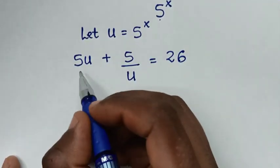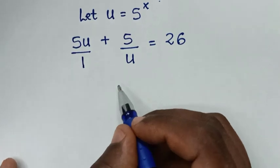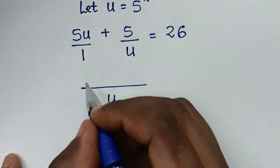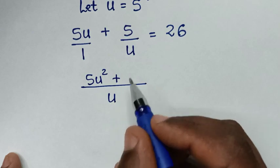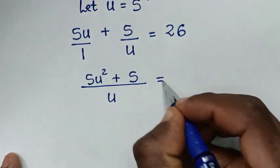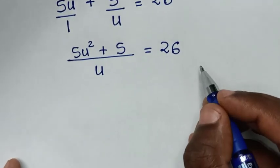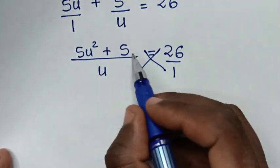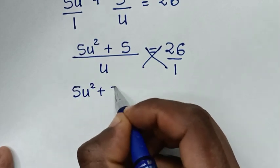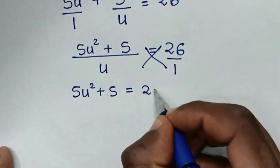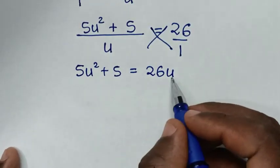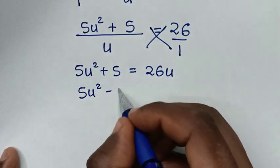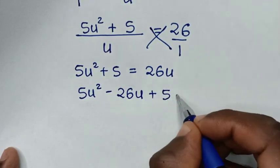In the next step, 5u is the same as 5u over 1. We find the LCM of 1 and u, which is u. So u divided by 1 times 5u gives 5u squared, plus 1 times 5 gives 5, equals 26. Cross-multiplying, 5u squared plus 5 equals 26u. Taking 26u to the left side gives 5u squared minus 26u plus 5 equals 0.